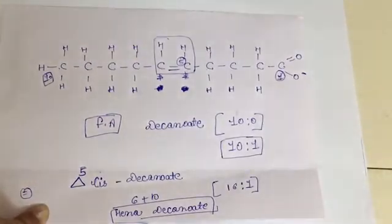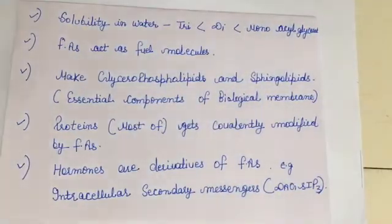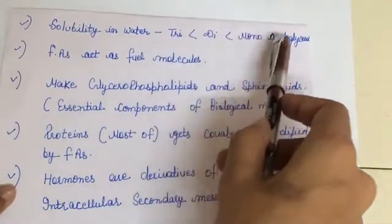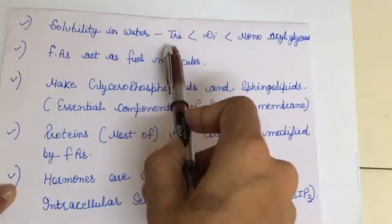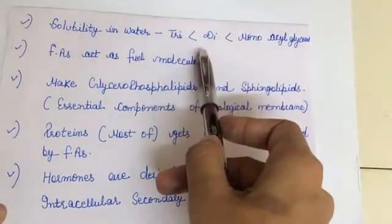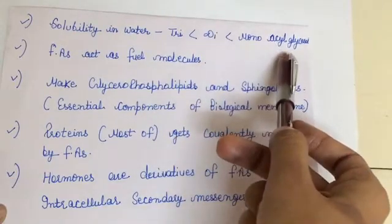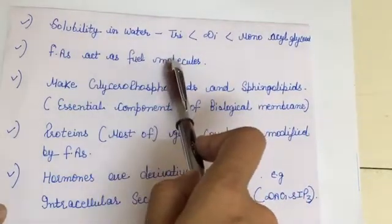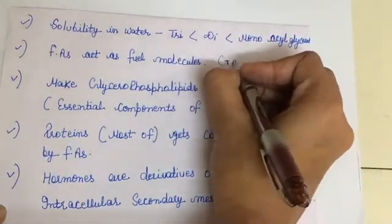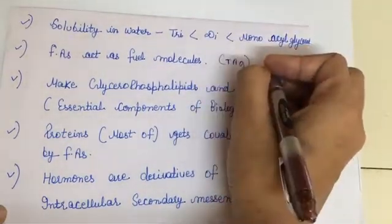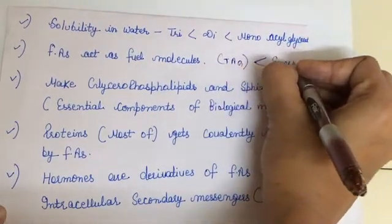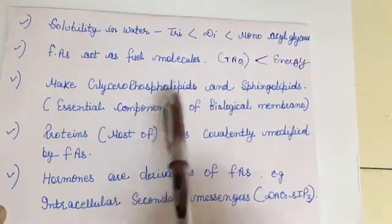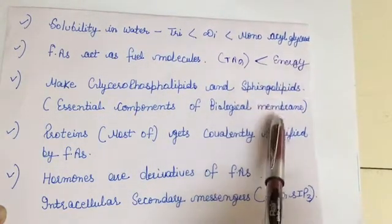Fatty acids are not soluble in water, but if we consider the solubility order, it goes: triacylglycerol has the least solubility, diacylglycerol has relatively more, and monoacylglycerol has the highest solubility in water. Fatty acids act as fuel molecules because they are stored as triacylglycerols and when broken down they generate energy. They also make glycerophospholipids and sphingolipids, which are essential components of the biological membrane.